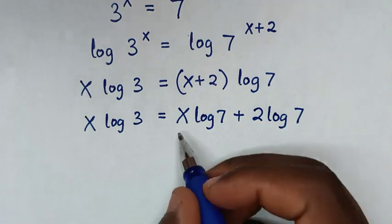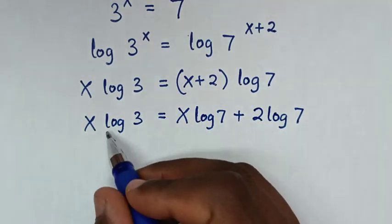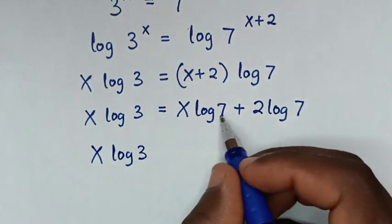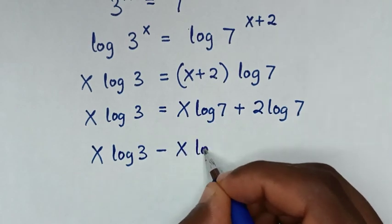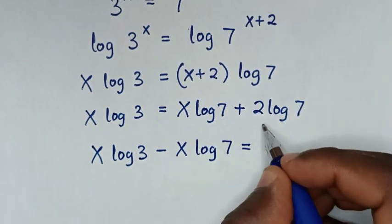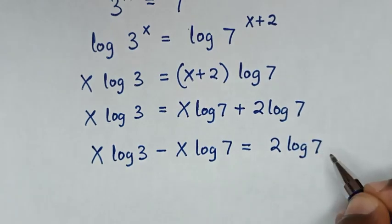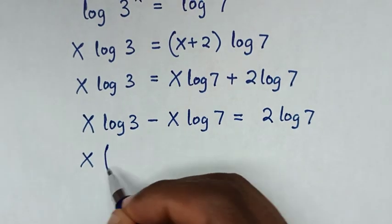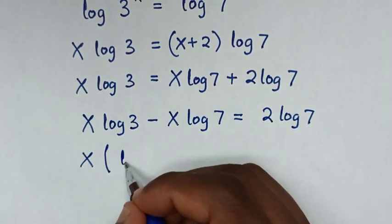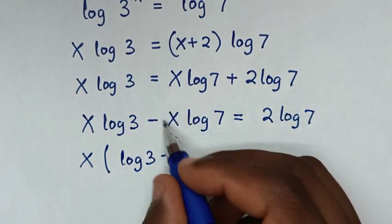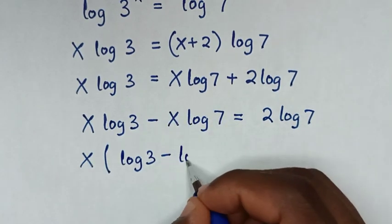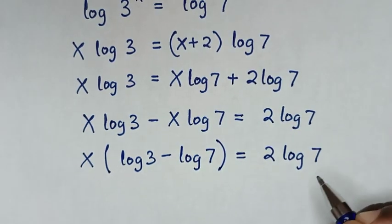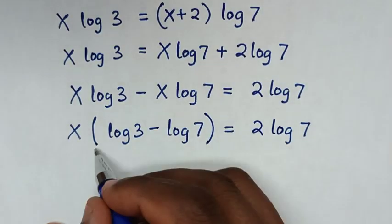Then the terms with x are taken to one side, so it will be x log of 3 minus x log of 7 is equal to 2 log of 7. Here x is common, so we take x out of the bracket: x times (log of 3 minus log of 7) is equal to 2 log of 7.